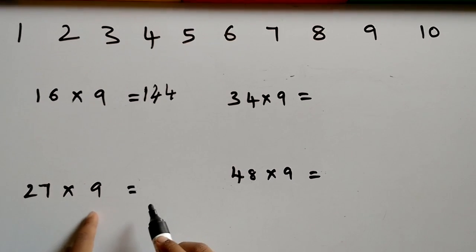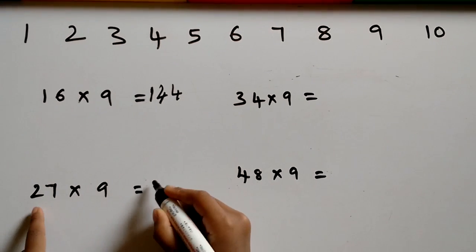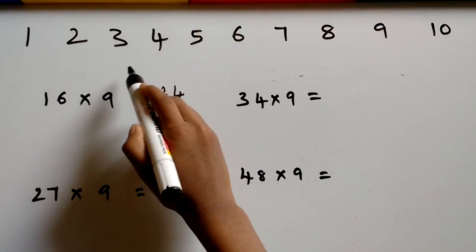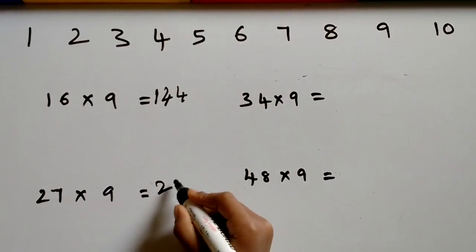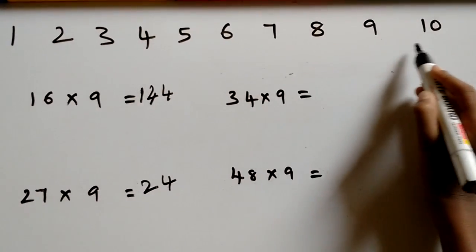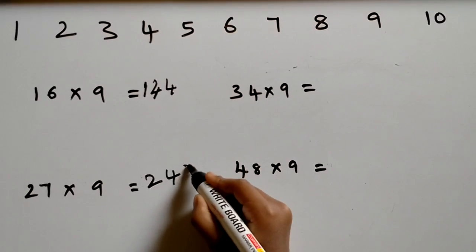27 nines are. First write 2. Between 2 and 7 there are 4 numbers. So write 4. After 7 there are 3 numbers. So write 3.